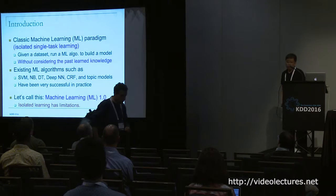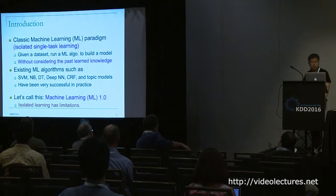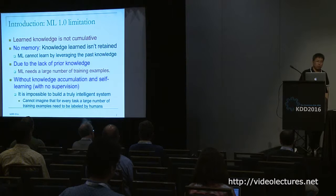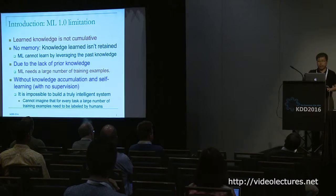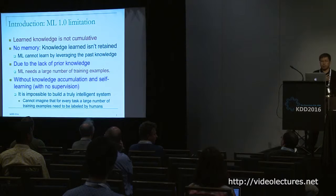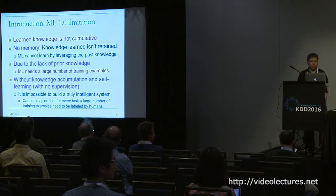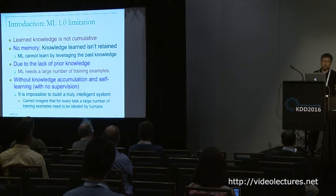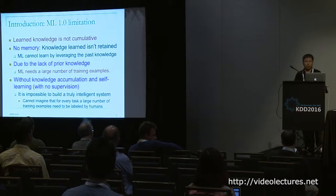Machine Learning 1.0 obviously has a lot of limitations. Human beings never do things this way. One key limitation is that knowledge is not cumulative — we learn from labeled or unlabeled data and then basically forget about it. For any new task we get a new bunch of labeled data, run it, and forget about it. There's no memory, so you can't use knowledge from the past to help you in the future. Due to this lack of prior knowledge, we need a lot of training examples, and deep learning requires even more.